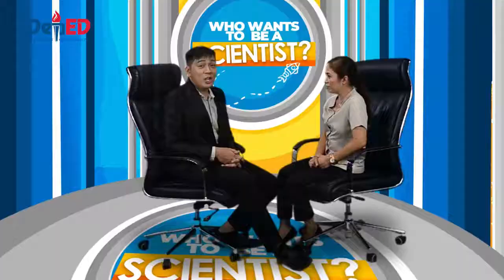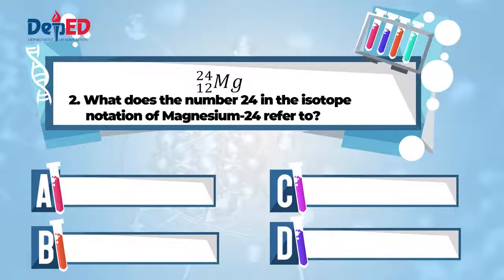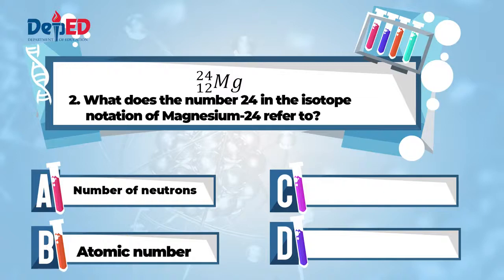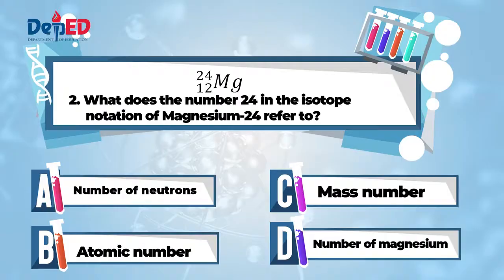Question number 2. What does the number 24 in the isotope notation of magnesium 24 refer to? A. Number of neutrons. B. Atomic number. C. Mass number. Or D. Number of magnesium atoms. I'm sure about this. It's C, mass number. That was fast!